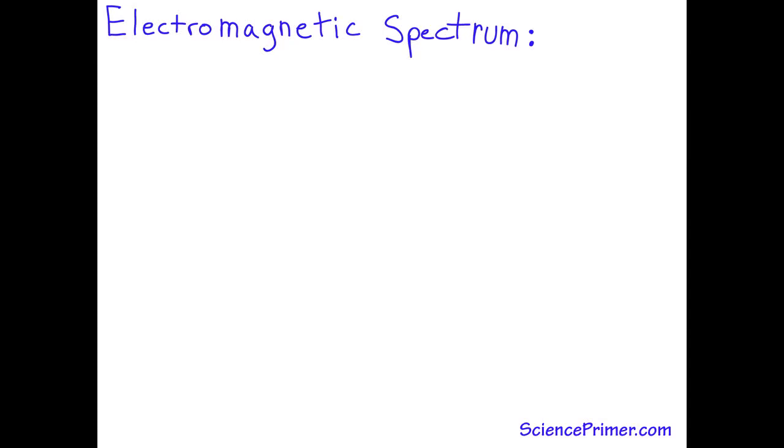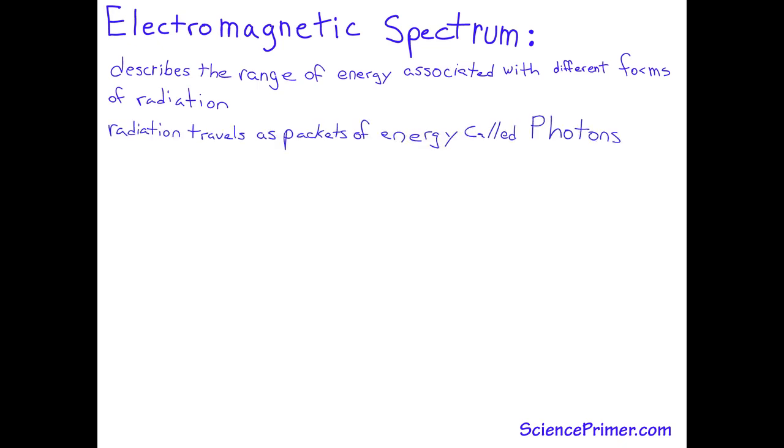The electromagnetic spectrum describes the range of energies associated with different forms of electromagnetic radiation. Electromagnetic radiation travels through space as discrete packets called photons.